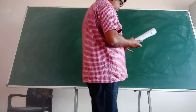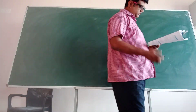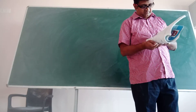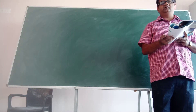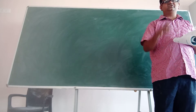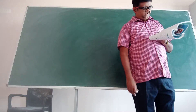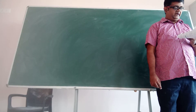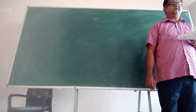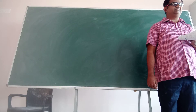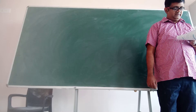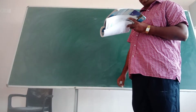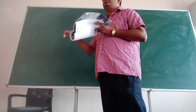Let us see a question on this concept. Calculate the temperature difference between two sides of an iron plate, two centimeters thick, when heat is transmitted to the plate at the rate of 600 calories per minute per square meter.